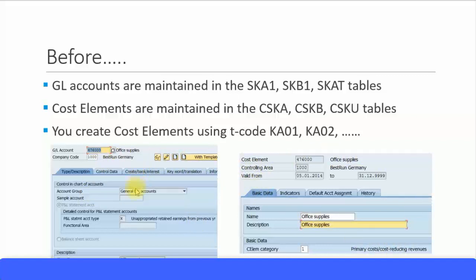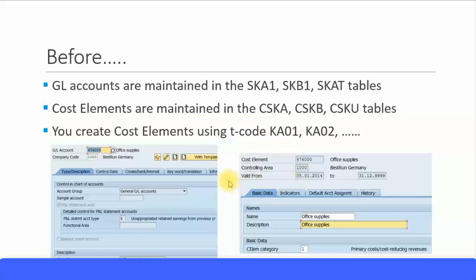Cost elements are maintained in the CSKA, CSKB, and CSKU tables. For cost element creation you use transaction codes KA01, KA02 for change, KA03 for display. Sometimes in the GL account master data itself you have the option of an 'Edit Cost Element' button where you go and create your cost element.